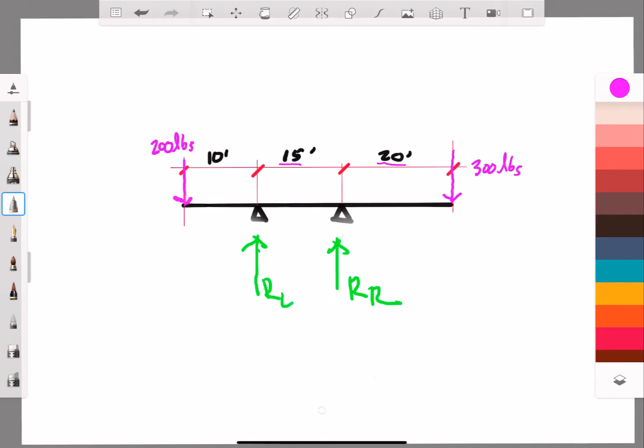Now, we have a bunch of equations we can use. One is real simple, which is that reaction left plus reaction right has to be equal and opposite to all of the other loads on the beam. So that's 200 pounds and 300 pounds, so that means 500 pounds total. Alright, that's great. We know that the two reactions together have to equal 500 pounds, but we don't yet know how that is going to be split up.